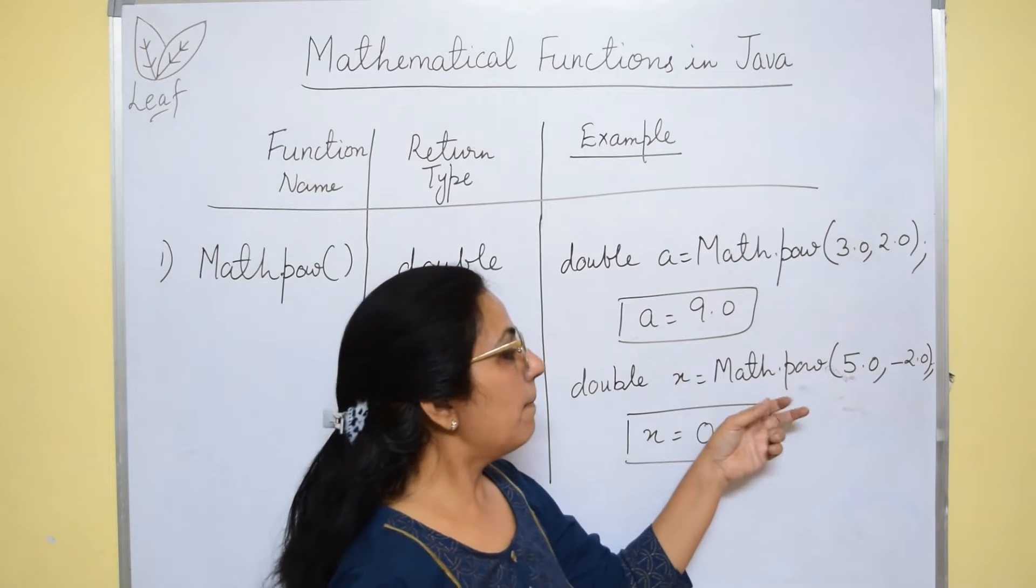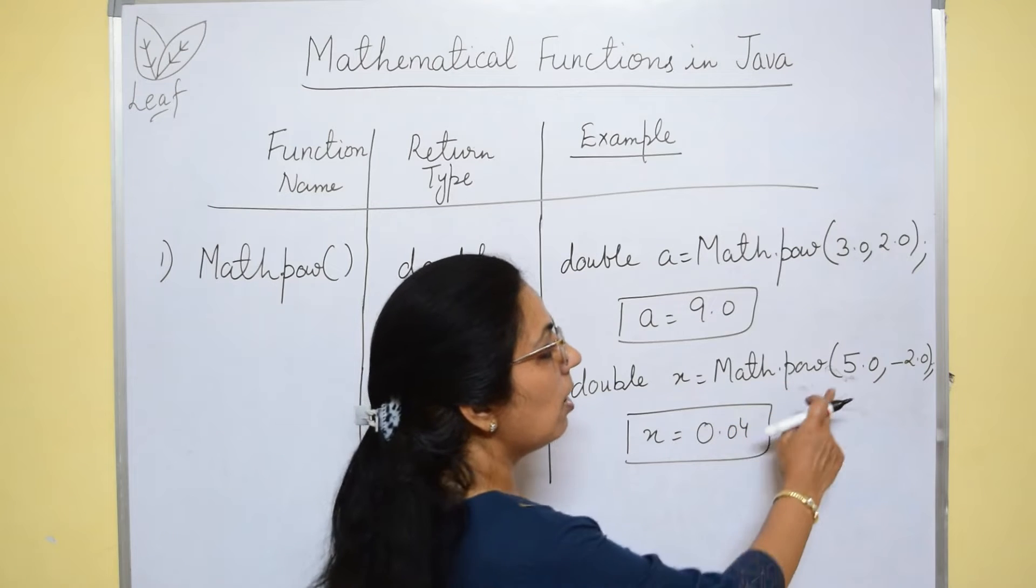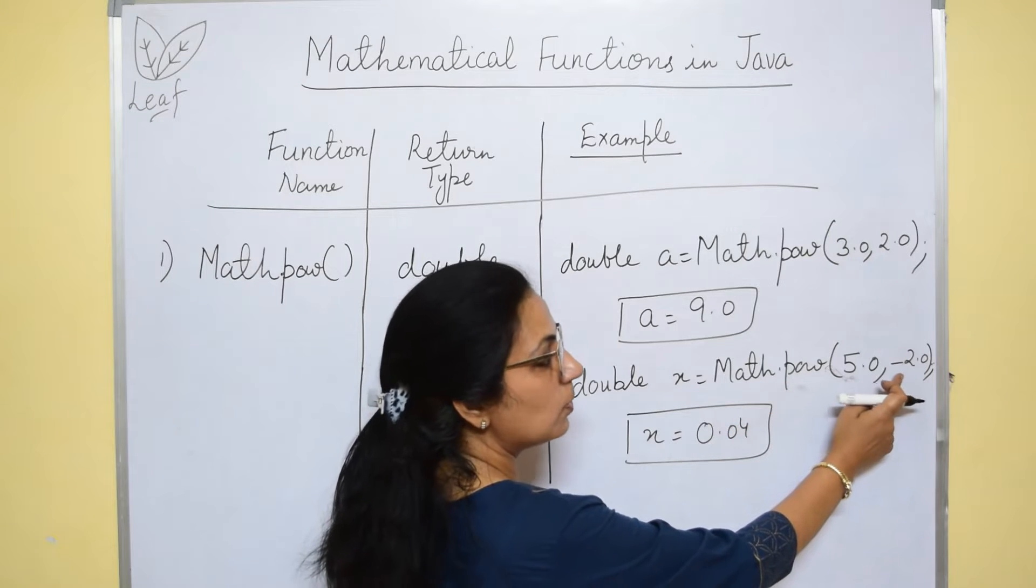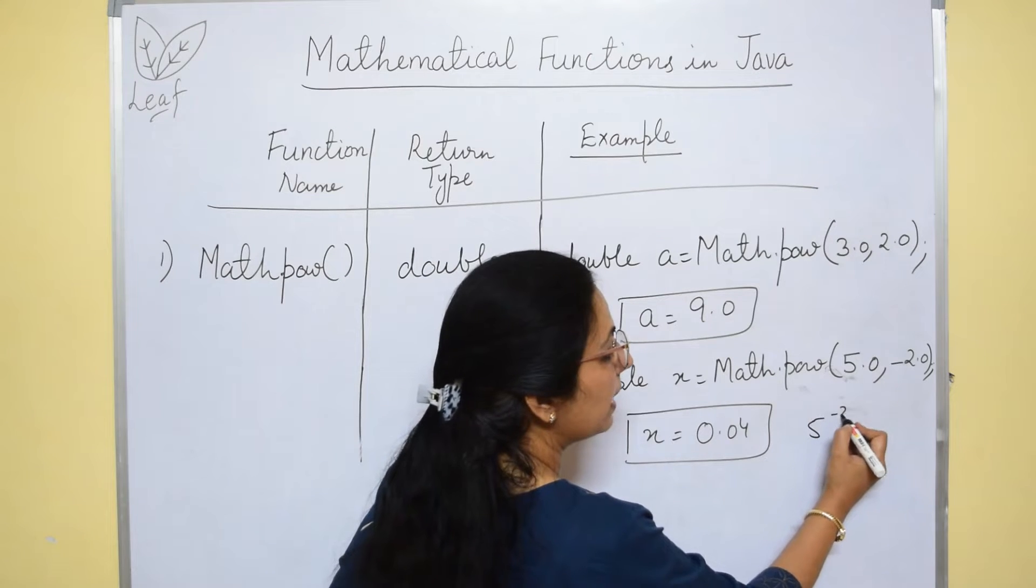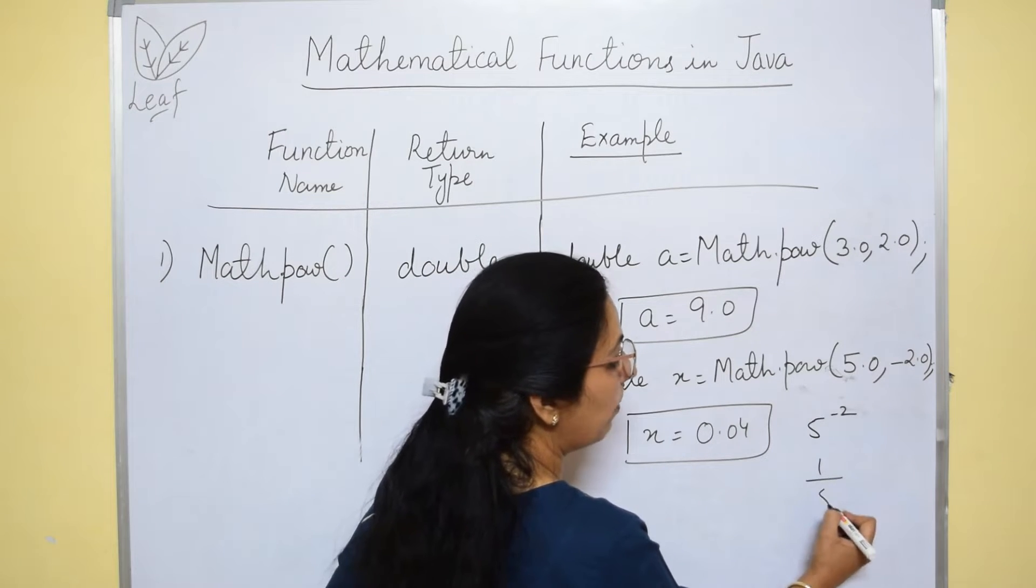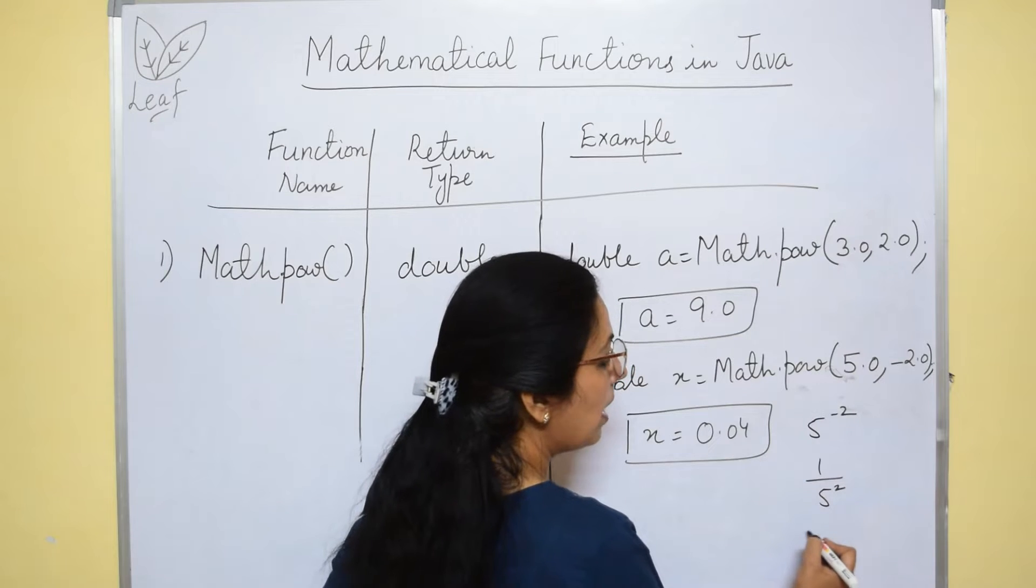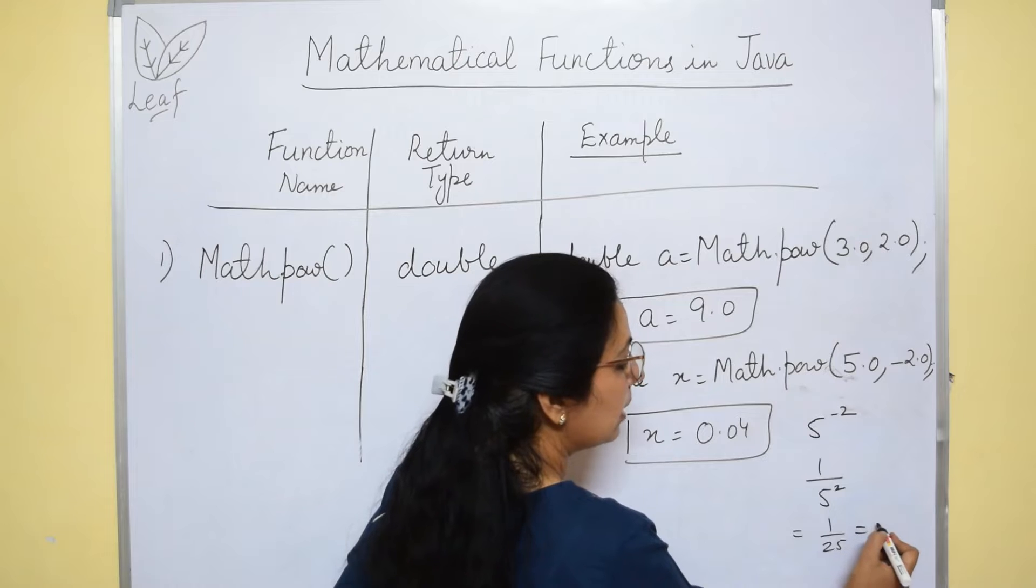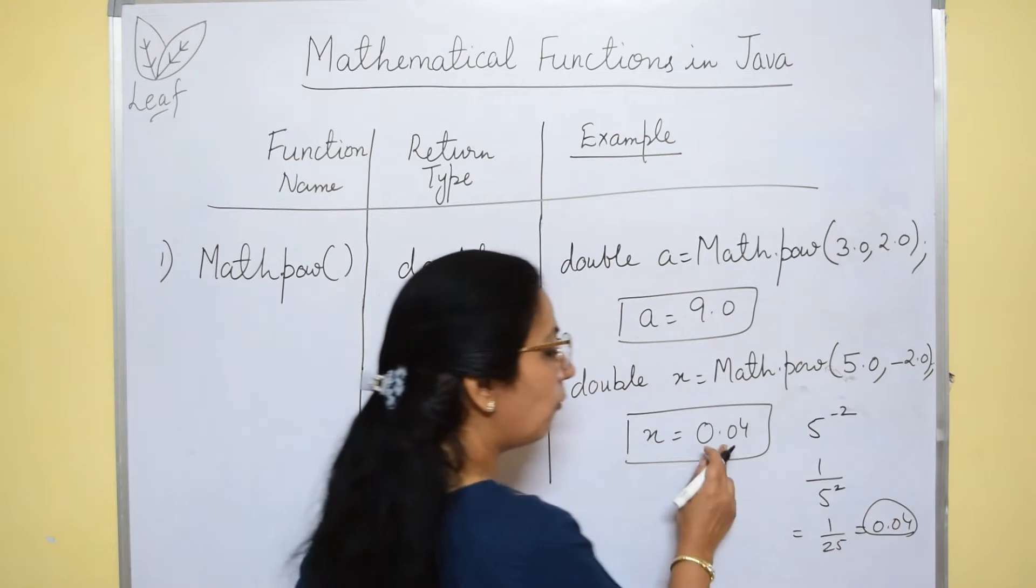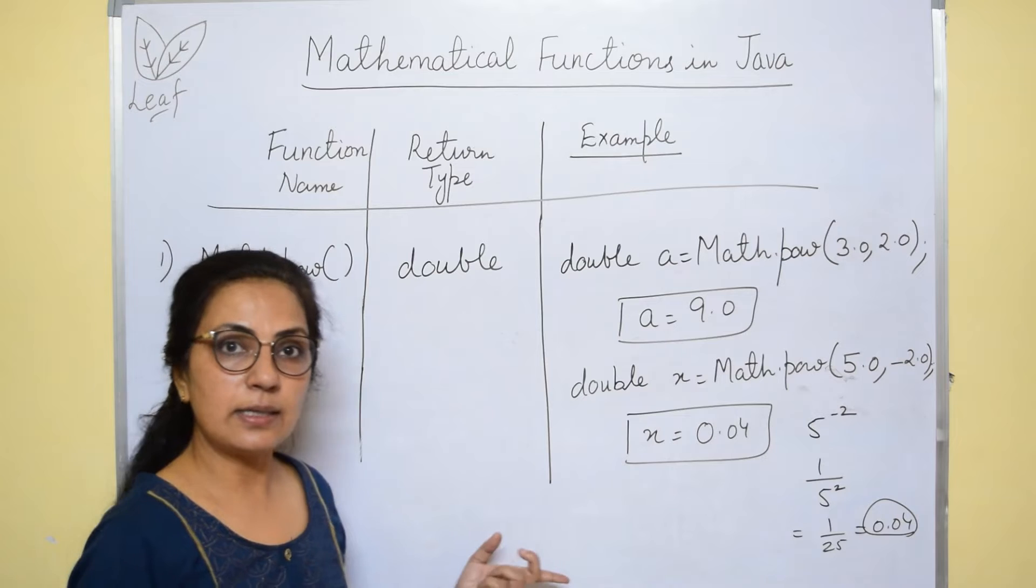Next example, math.pow(5.0, -2.0). That means 5 to the power -2. That means 1 upon 5 to the power 2. So if you will calculate this 1 upon 25, this will come 0.04. Right? Is it clear?